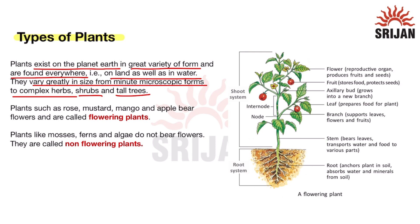Plants such as rose, mustard, mango, and apple bear flowers, and since they bear flowers they are called flowering plants.